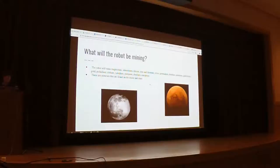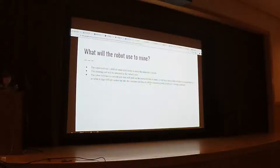What will the robot use to mine? Either a drill or some kind of blade to mine the materials it needs. This mining tool will be attached to the robot's arm. This robot will have a second arm that will pick up the materials that it mines. It will be able to move a shovel that will have a vacuum built in, so what it digs will get sucked up into the vacuum, and then it will be transferred and stored in its storage container.